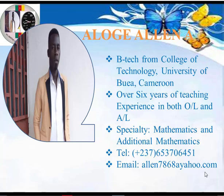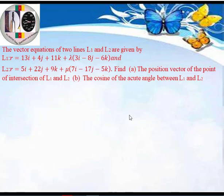Hello guys, let's talk about vectors today. Today's question says that the vector equations of two lines L1 and L2 are given by: L1 is R = 13i + 4j + 11k + λ(3i - 8j - 6k), and L2 is R = 5i + 22j + 9k + μ(7i - 17j - 5k). Find (A) the position vector of the point of intersection of L1 and L2, and (B) the cosine of the acute angle between L1 and L2.